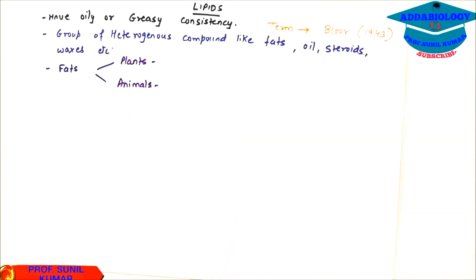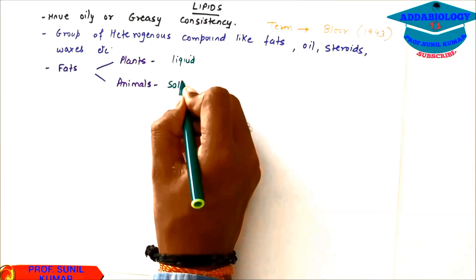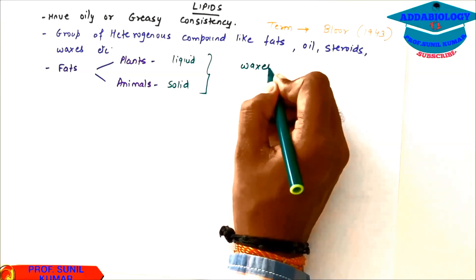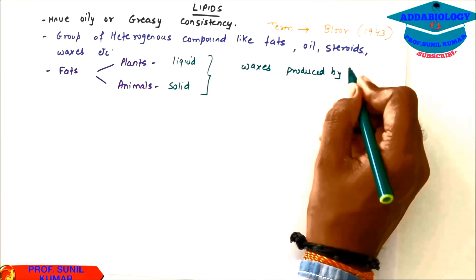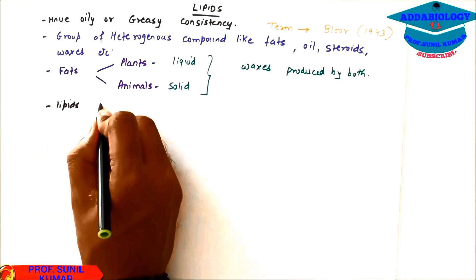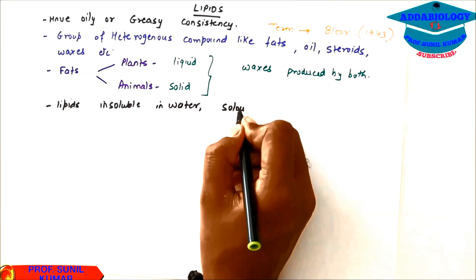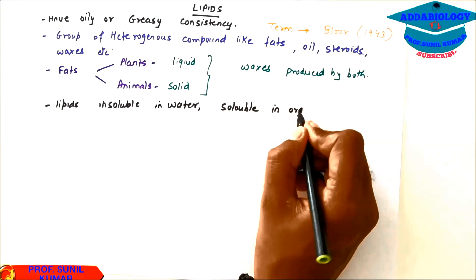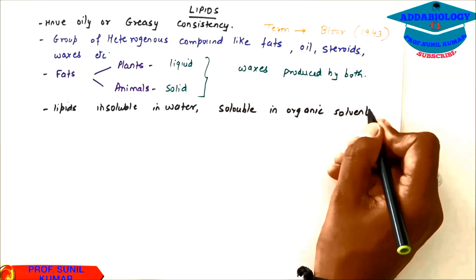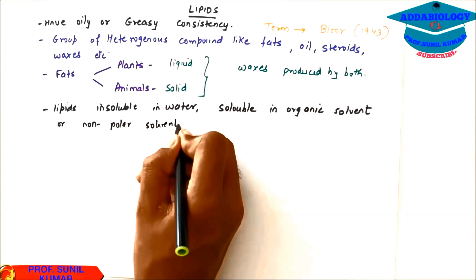The lipids in plants are liquid whereas the lipids or the fats in animals are solid. When we talk about waxes, they are produced by both plants as well as the animals. Lipids are insoluble in water but they are soluble in organic solvent or non-polar solvent like benzene, chloroform, etc.